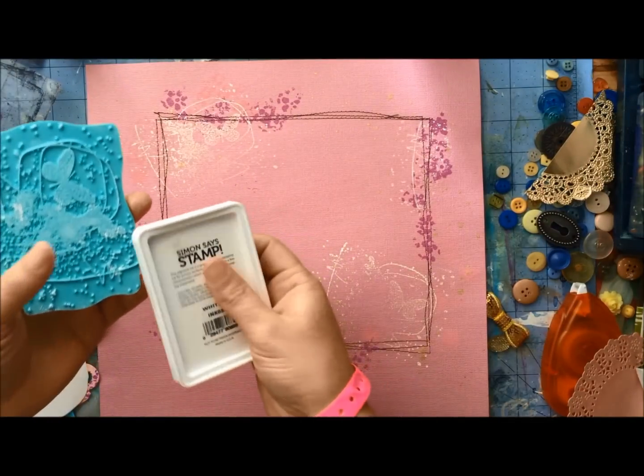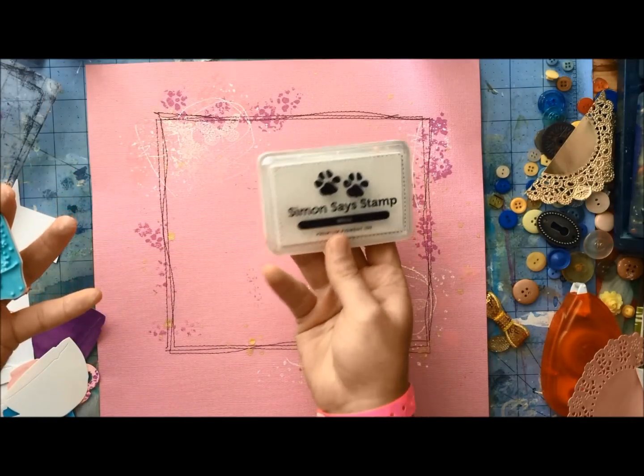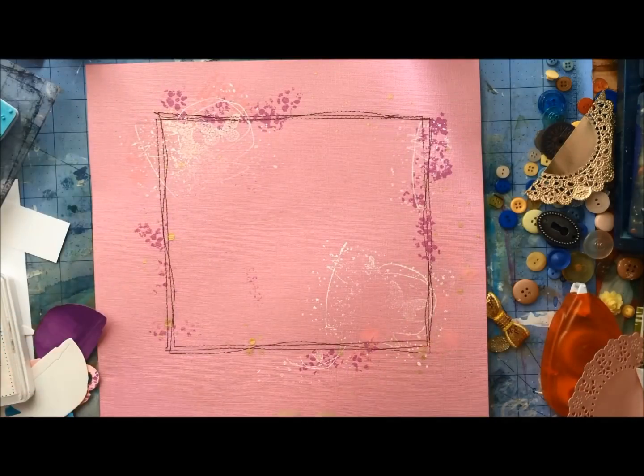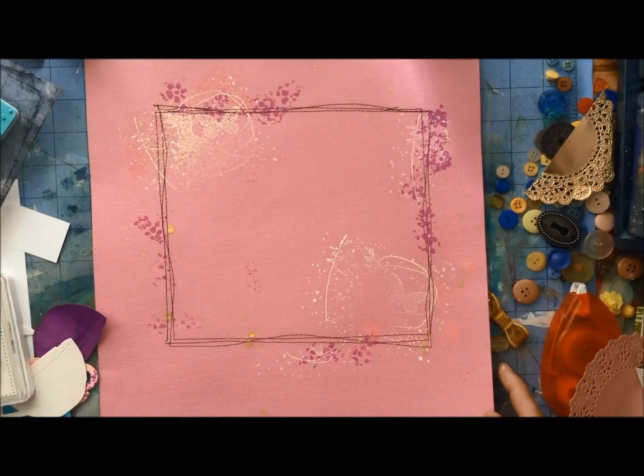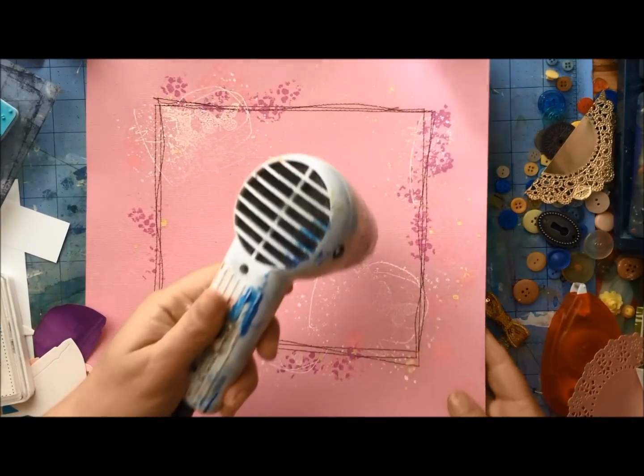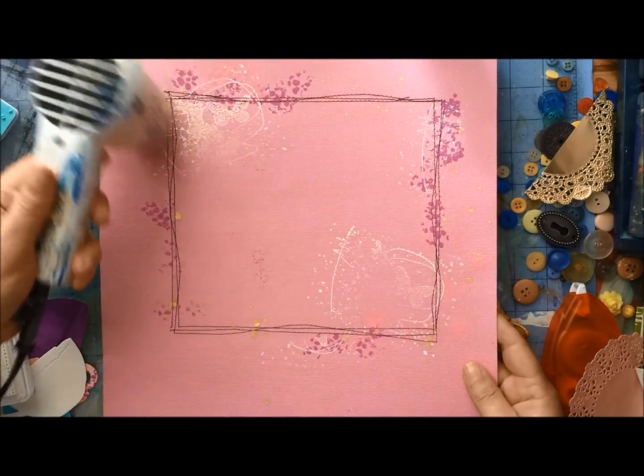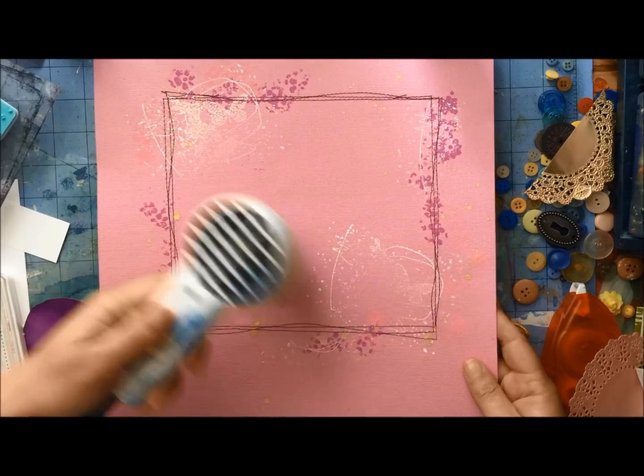Now, a tip about this particular ink pad, it does actually work really well to sprinkle embossing powder on the ink and then shake off the excess and emboss it. In this case, I want to speed things along. So I'm just going to heat set it so that it's dry.